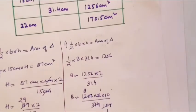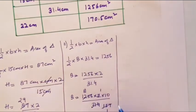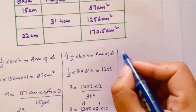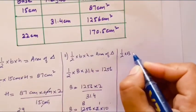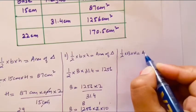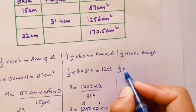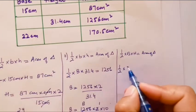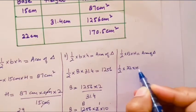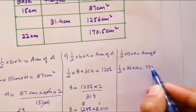In the same way, let's see the last part. Last part, half into base into height equals to area of triangle. Half into, in the last part base is given as 22, height you have to find, area is given as 170.5. Height to find.